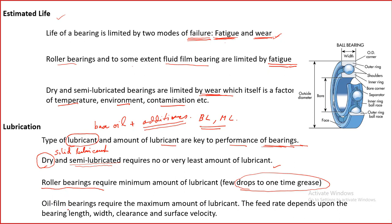Oil film bearings require the maximum amount of lubricant — this is one demerit. They require a lot of lubricant because the shaft has to float on a film of lubricant. The feed rate depends upon bearing length, width, clearance, and surface velocity, and can be quite high in some cases.